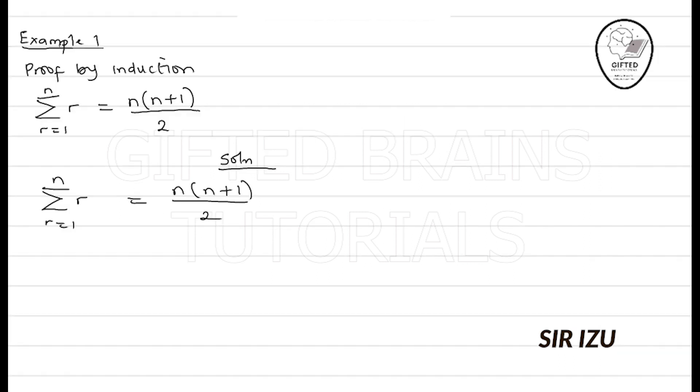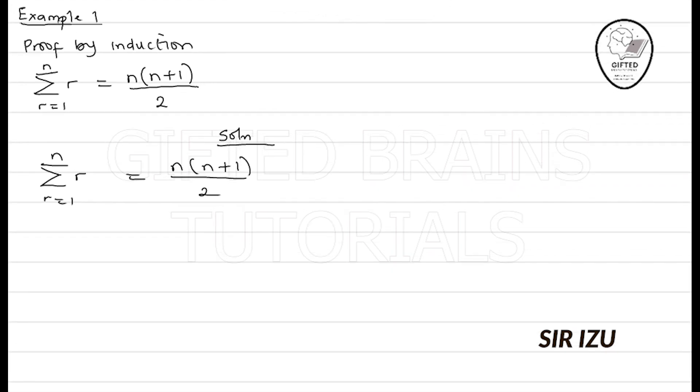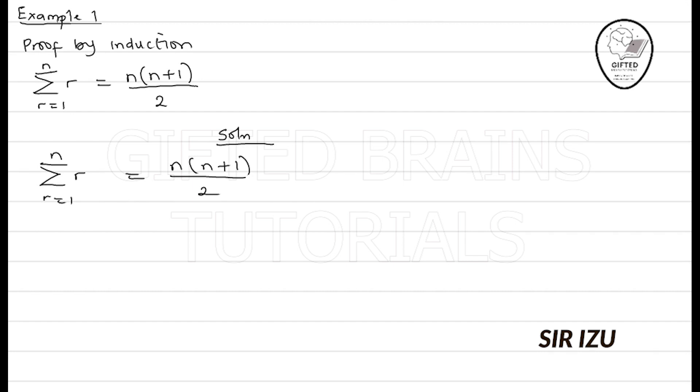Let's take example 1 now. Prove by induction that the summation of r from r equals 1 to n equals n times n plus 1 over 2. The first thing I will do when I see a question in sigma form is to express what the sigma means. It's easier that way.